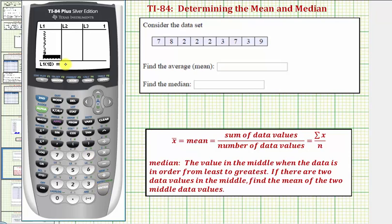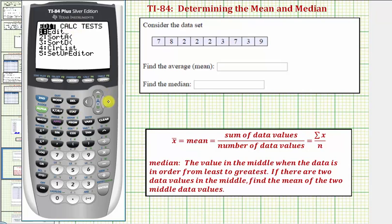Now we want to select the one-var stats tool. We press STAT, right arrow once to CALC. Notice how the first option is one-var stats, which is what we want. We can press one or ENTER since one is already highlighted. I'll go ahead and press ENTER.